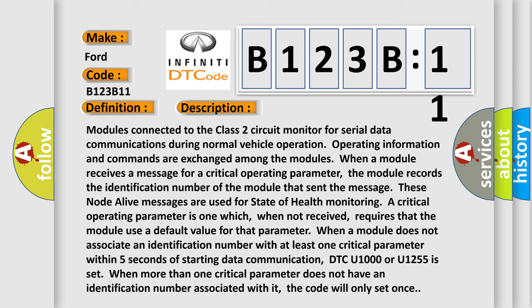Modules connected to the Class 2 circuit monitor for serial data communications during normal vehicle operation. Operating information and commands are exchanged among the modules. When a module receives a message for a critical operating parameter, the module records the identification number of the module that sent the message.